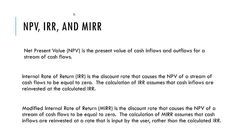The internal rate of return, or IRR, is the discount rate that causes the net present value of a stream of cash flows to be equal to zero. In other words, it's the rate of return that the project is going to earn for the firm. The calculation of IRR assumes that cash inflows are reinvested at the calculated IRR. For example, if we calculate an IRR of 12%, the calculation assumes that any cash inflows received during the life of a project would also be reinvested at 12%.